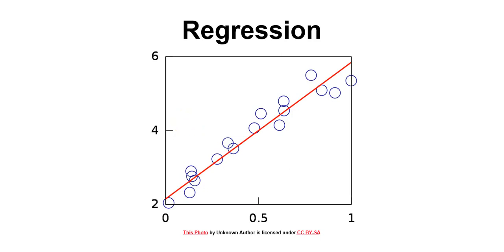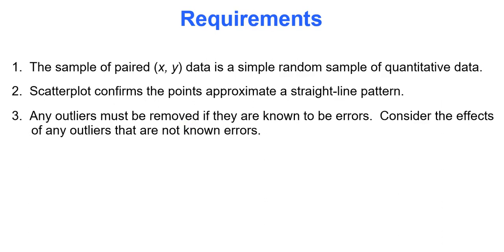Hello and welcome. In this video we'll talk more about regression, which is using a regression equation to create predictions based on some x value or explanatory variable. First, the requirements: the sample of paired data must be a simple random sample, the scatter plot must confirm a straight line pattern and any outliers are removed, and consider the effects of any outliers that are not known errors.